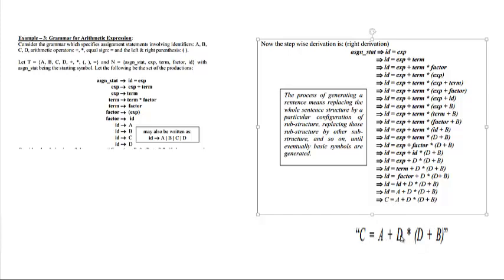As a result, we get the expression C = A plus D multiplied by (D plus B). Thank you for watching the tutorial. Please subscribe to the channel for more informative videos.